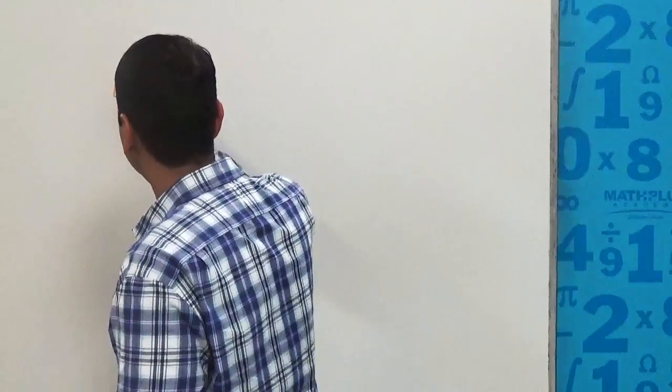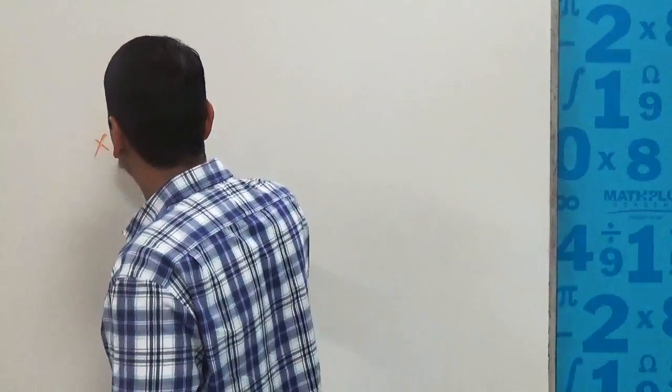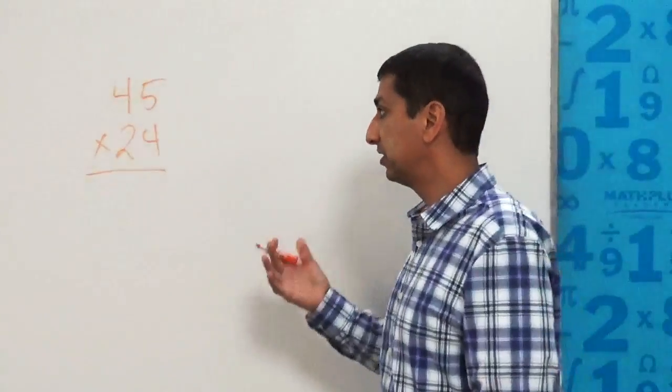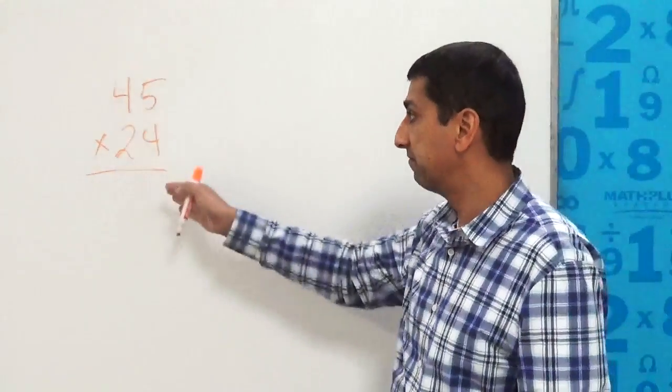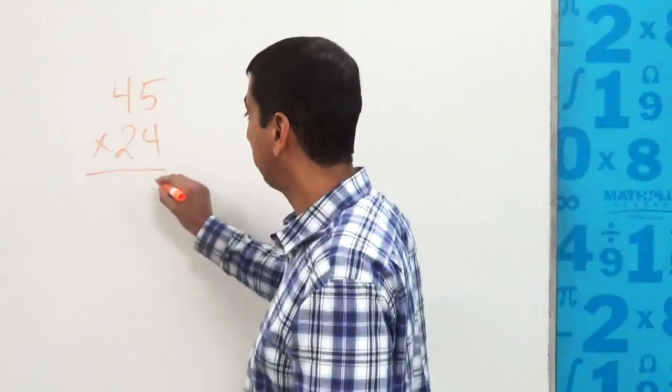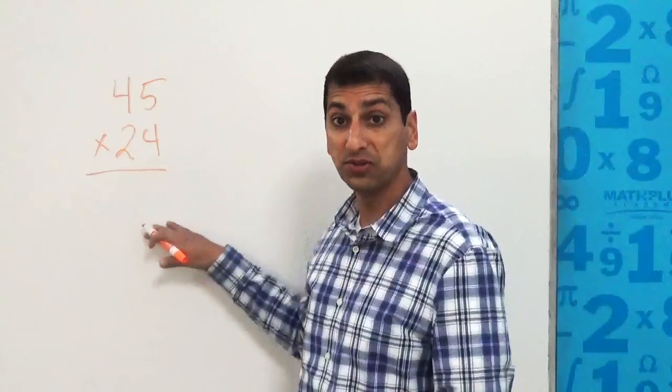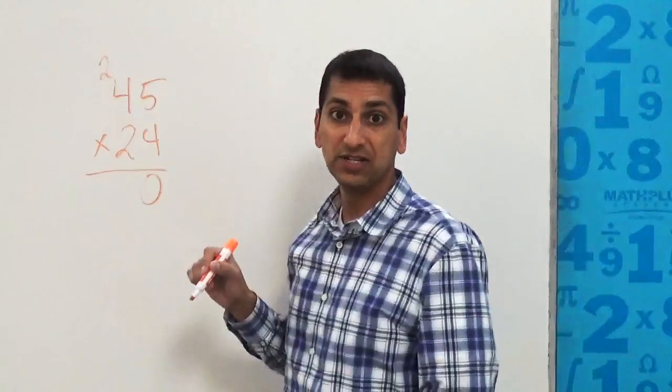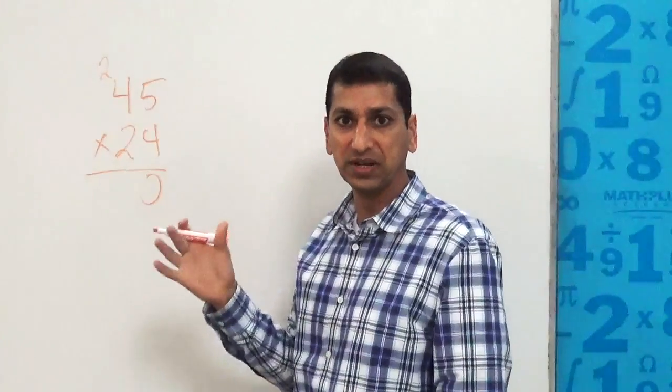And as students, we may have learned, or you've probably learned, to do the standard algorithm: line your numbers up vertically, and then start with the ones column. Four times five is 20. We're not allowed to write the whole 20 here, we just write the zero and bring the two up there. So that's the first place where we're doing something that is kind of weird.